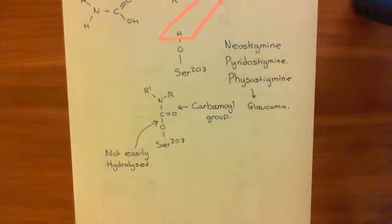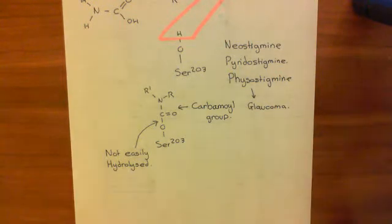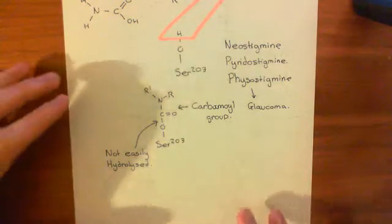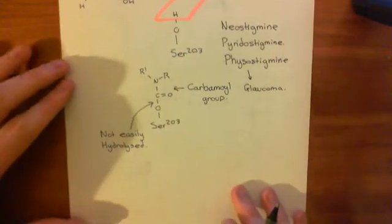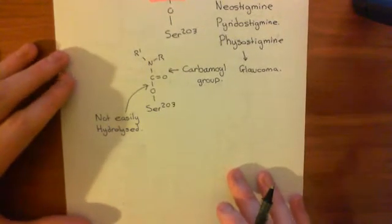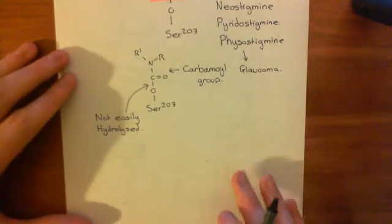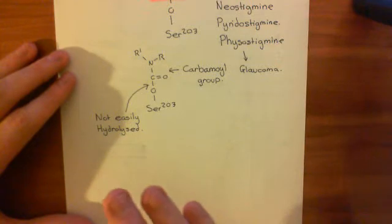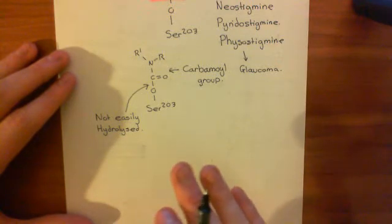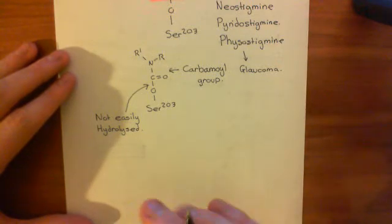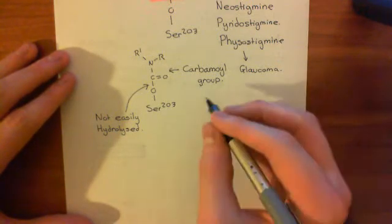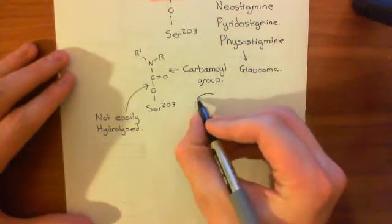I'm going to explain to you what glaucoma is. Glaucoma is a disease involving the eyes, so let me show you the structure of an eye. We're going to take a transverse cross-section of an eye.